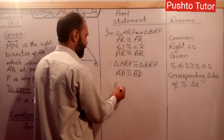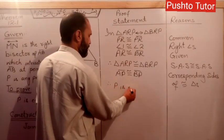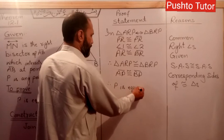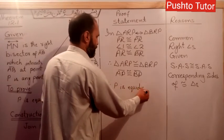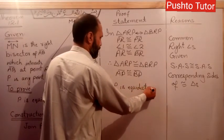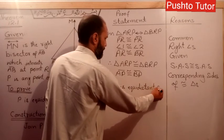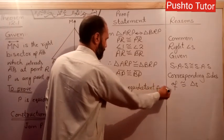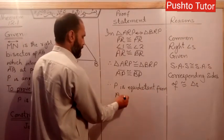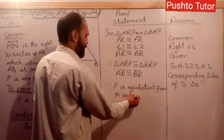Therefore P is equidistant from A and B.